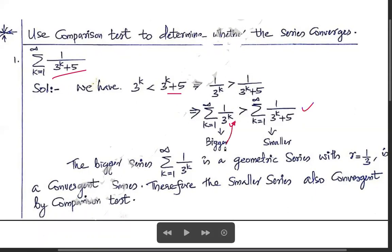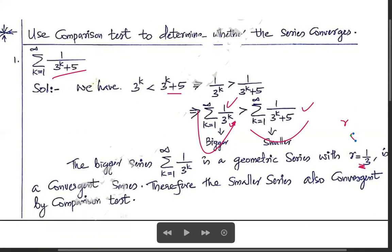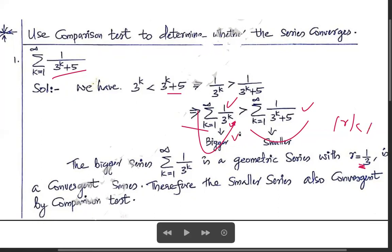So summation 1/3^k is the bigger series and summation 1/(3^k + 5) is the smaller series. Now 1/3^k is a geometric series with common ratio r = 1/3. Since |r| < 1, this series is convergent. Therefore, by the comparison test, since the bigger series converges, the smaller series summation 1/(3^k + 5) is also convergent.